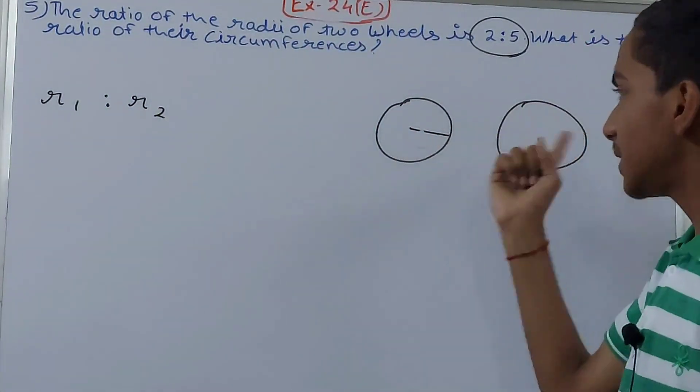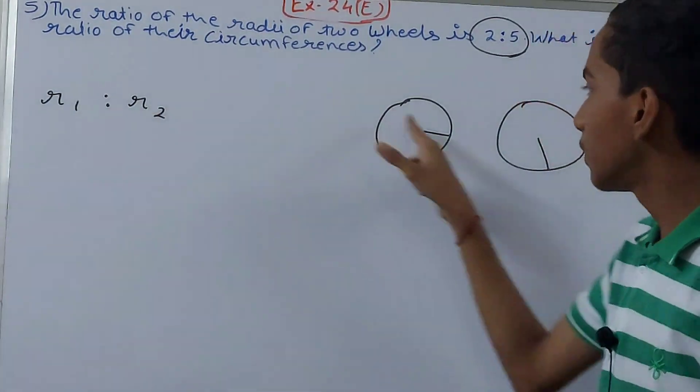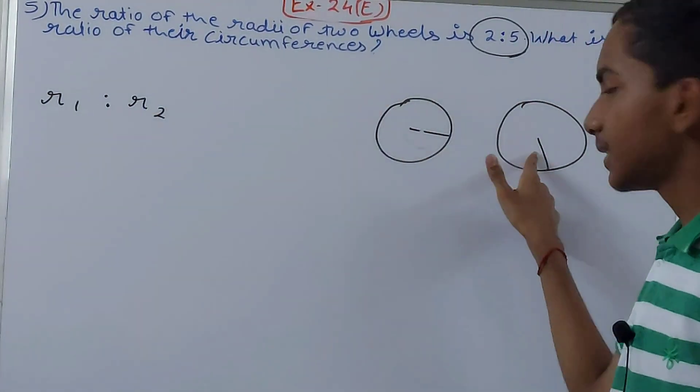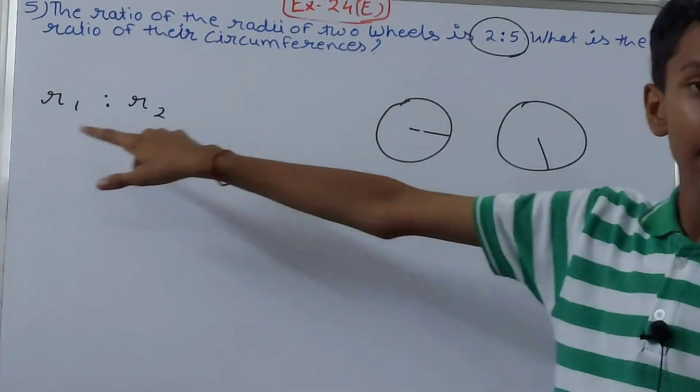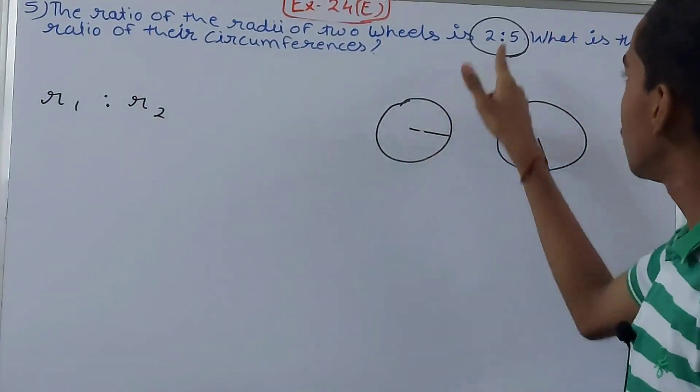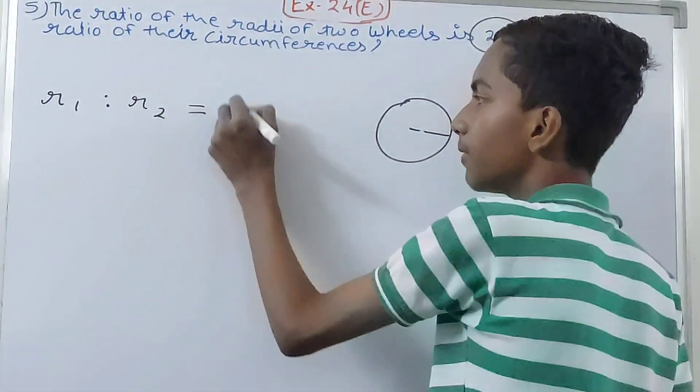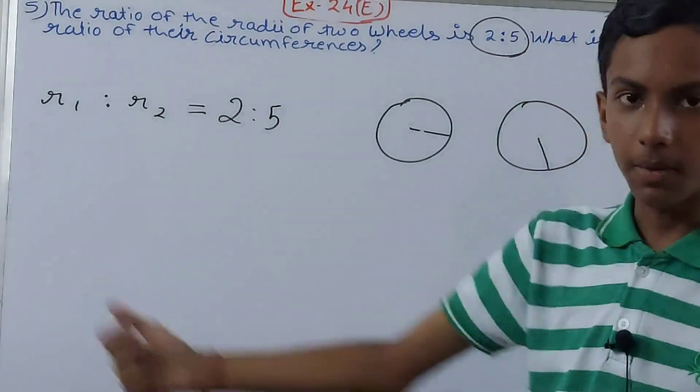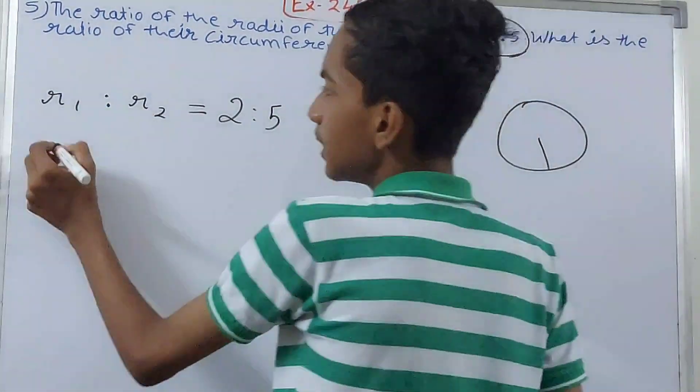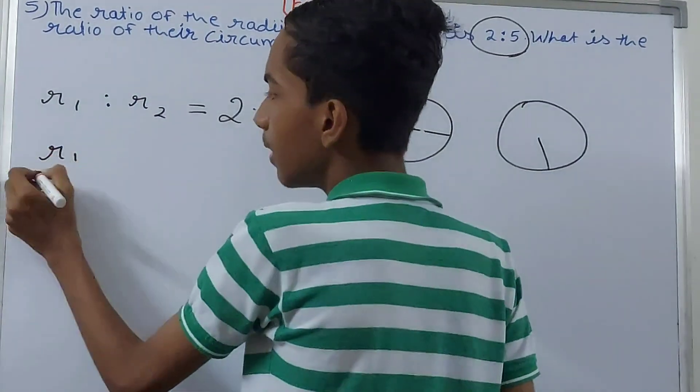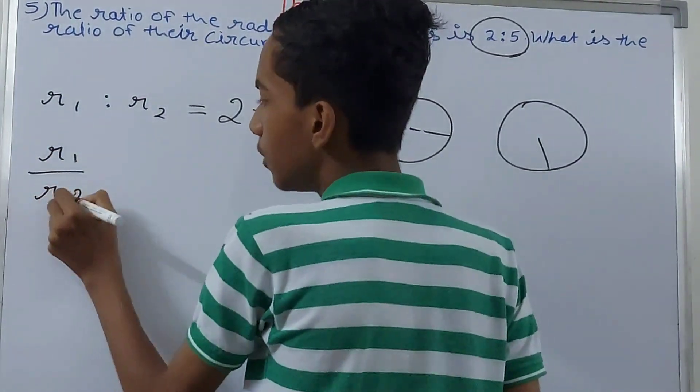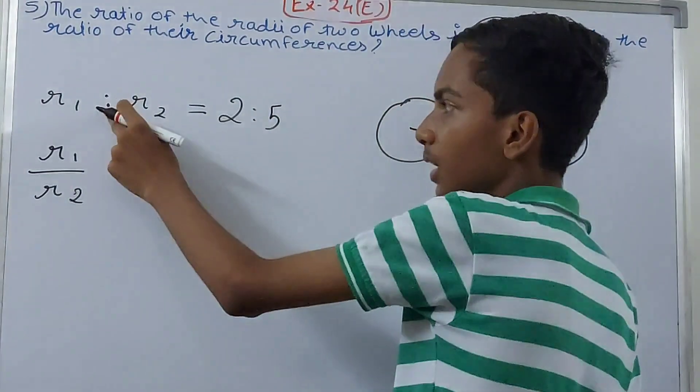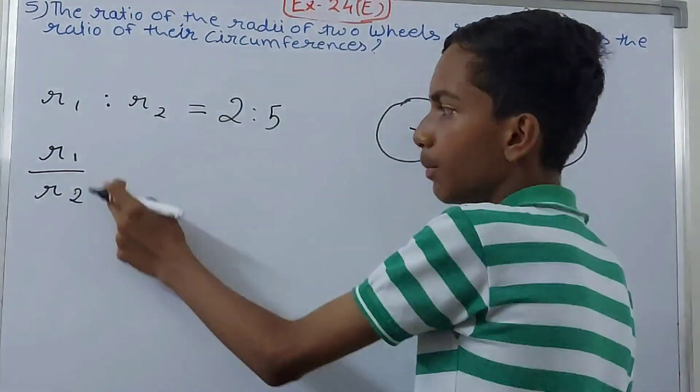That means radius one is to radius two. We will call this as r1 and this is r2. So basically the ratio between the two is two is to five. Now if I change this, we will get r1 upon r2.